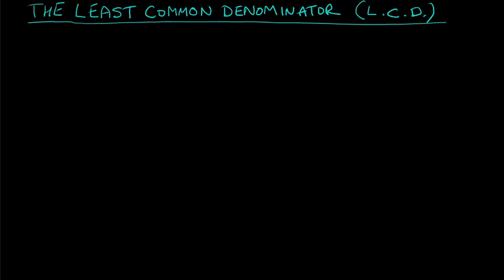In this video we're going to find the least common denominator in the mathematical sense. Some of you might have done this before, but we might be doing it in a slightly different way than you're used to. By now we know how to simplify rational expressions, multiply them, and divide them, so now we need to learn how to add and subtract rational expressions. Before we can do that, we have to be versed in finding the least common denominator, which I'll call the LCD.